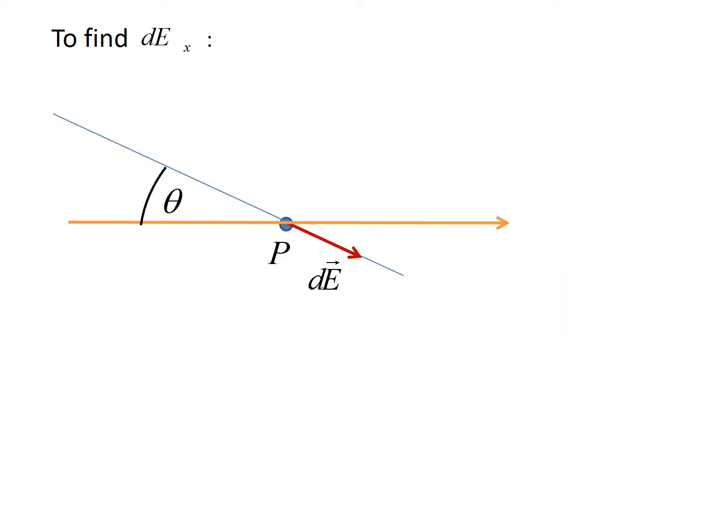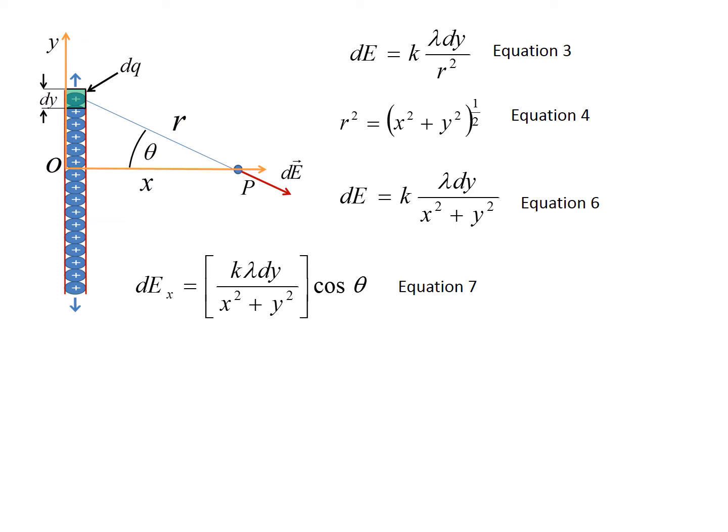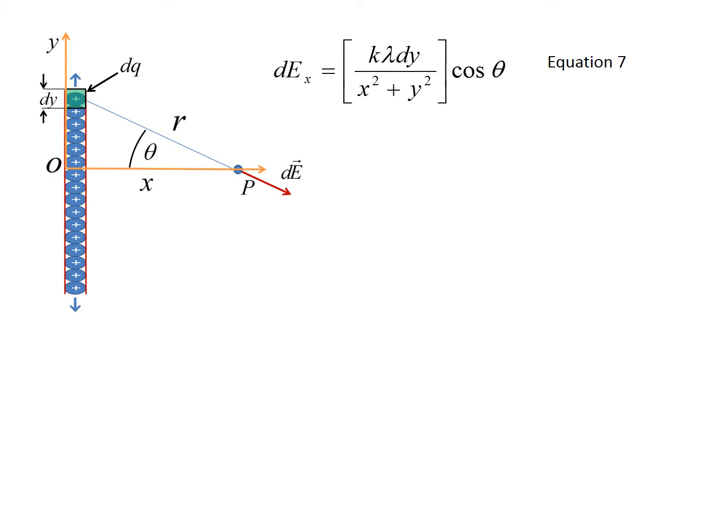We project dE along the X axis to get dE sub X. We see theta appears on both the left and right due to vertical angles, so the horizontal component of dE is dE cosine theta, giving dE sub X. Equation seven is dE sub X equals everything we had before times cosine theta. To find the net electric field of the wire, we need to integrate dE sub X. The only issue is that we currently have two variables changing: Y and theta.